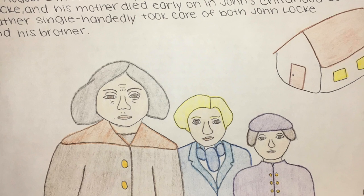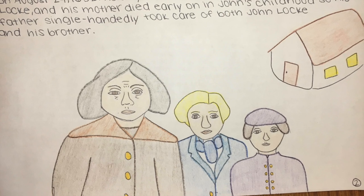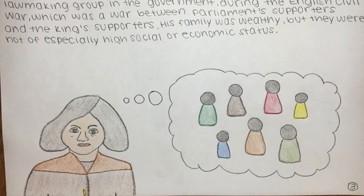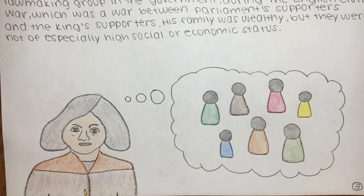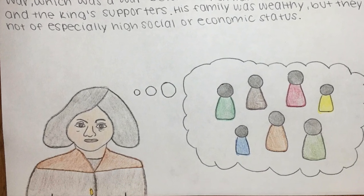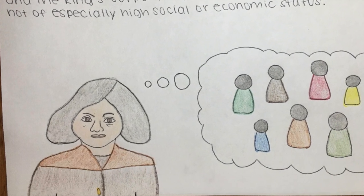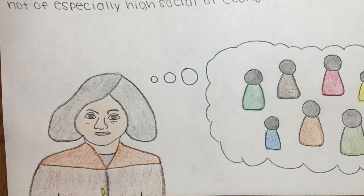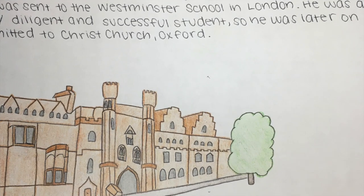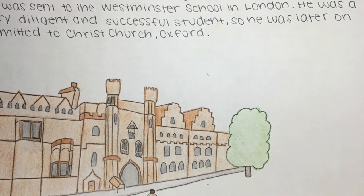He only had one younger brother, Thomas Locke, and his mother died early on in John's childhood, so his father single-handedly took care of John Locke and his brother. His father, amusingly also named John Locke, was a legal clerk. John Locke's father served in the Parliamentary Forces, the lawmaking group in the government, during the English Civil War, which was a war between Parliament's supporters and the King's supporters. His family was wealthy, but they were not of especially high social or economic status. John Locke spent his childhood in the West Country, also known as the area of southwestern England.